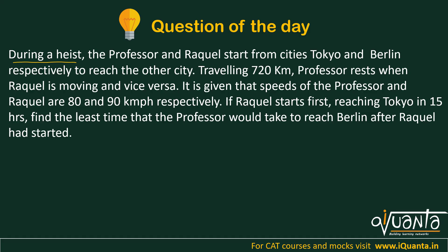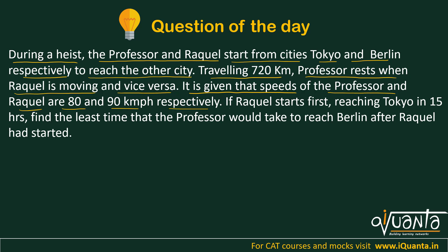The question is: during a heist, the professor and Raquel start from cities Tokyo and Berlin respectively to reach the other city. Travelling 720 kilometers, the professor rests when Raquel is moving and vice versa. The speed of the professor and Raquel are 80 and 90 kmph respectively. If Raquel starts first, reaching Tokyo in 15 hours, find the least time that the professor would take to reach Berlin after Raquel had started.